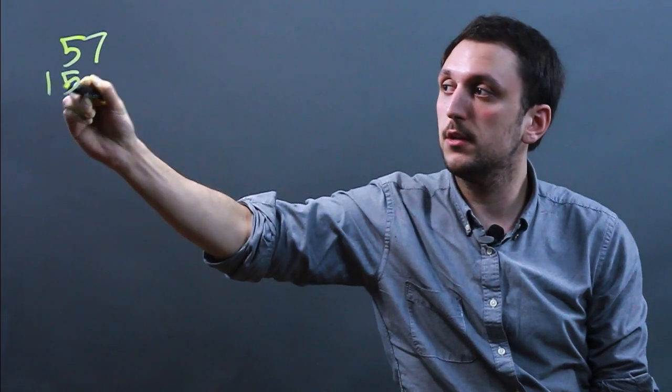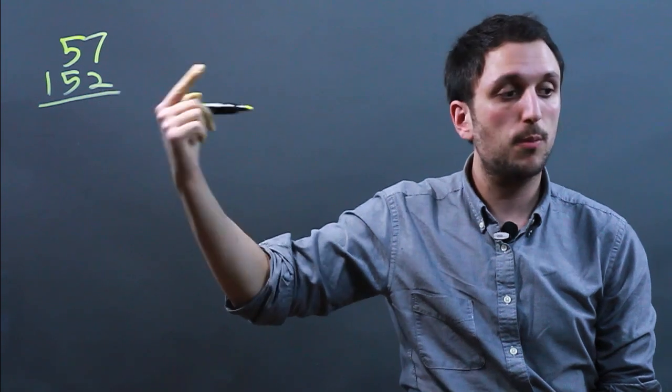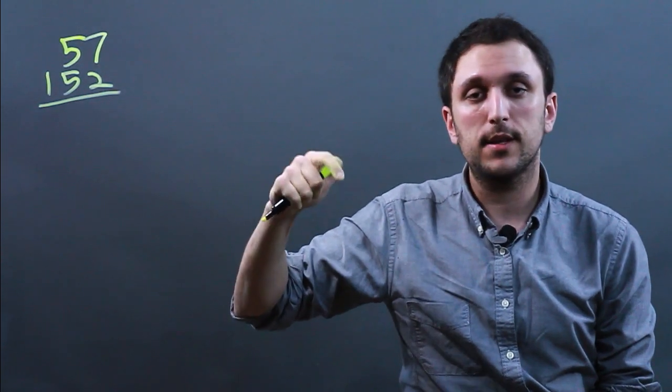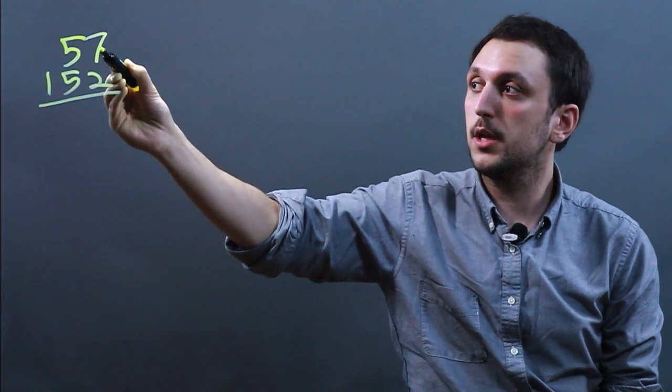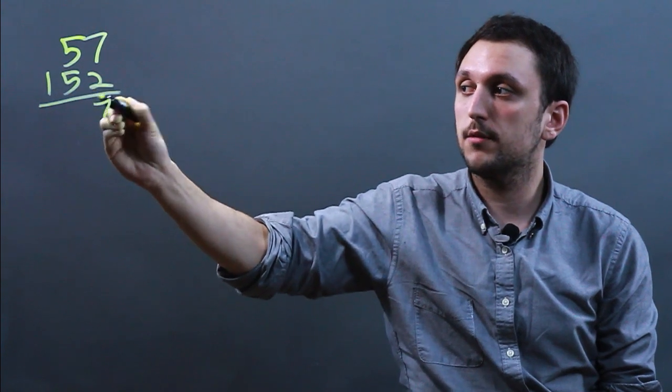Let's take the numbers 57 times 152. Now when you're multiplying, the most important thing is that you remember the order. So a very common error is getting the wrong order, meaning you would say 7 times 1 is 7, and that's wrong.